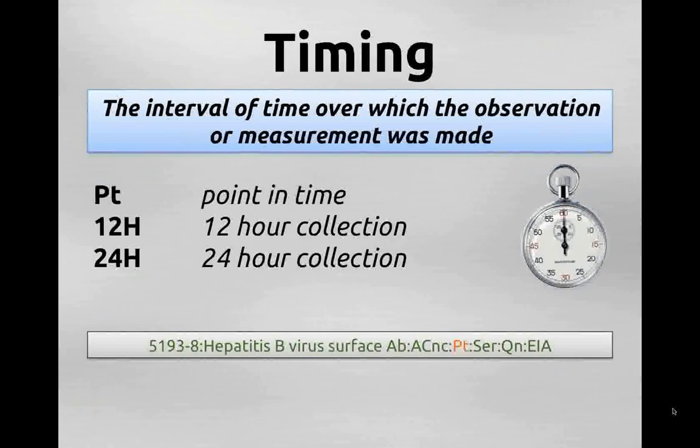The timing axis is where we identify the interval of time over which the observation was made. Many times this is just a single point in time. But in other cases, such as a 24-hour urine collection, you want to specify that duration. The timing axis is where that kind of specification is made.